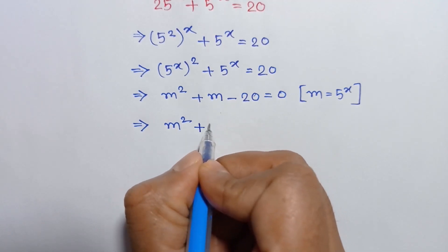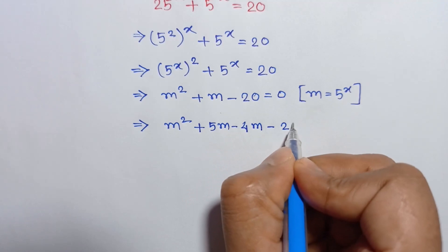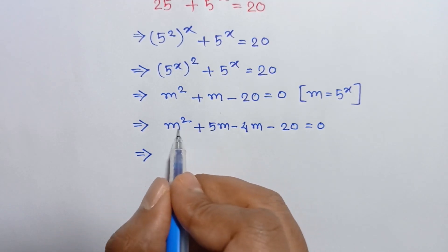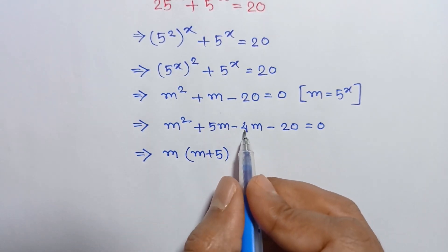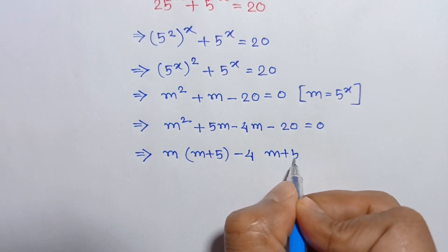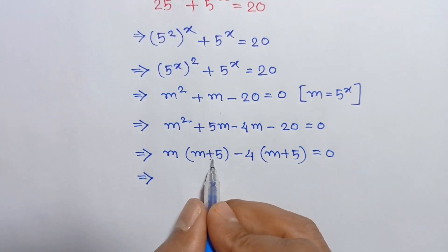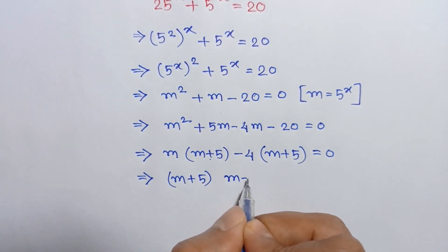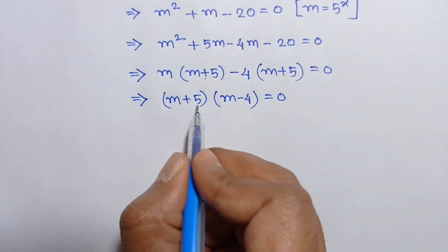So if we break positive m as plus 5m minus 4m, minus 20 is equal to 0. Taking common m from the first two terms we will have m times m plus 5, and taking common negative 4 from the last two terms we will have negative 4 of m plus 5 is equal to 0. Taking common m plus 5, we get m plus 5 times m minus 4 is equal to 0.